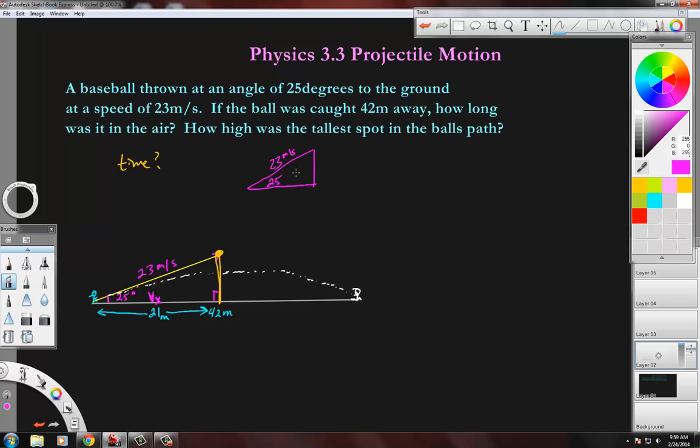I'll hand sketch that where this is 25 and this is 23 meters per second, and we want to know this distance, V sub X. This is a right angle, so cosine of 25 degrees equals V sub X over 23. So 23 times the cosine of 25 is 20.84, which we'll call 20.8 meters per second. That's the absolute sideways velocity.